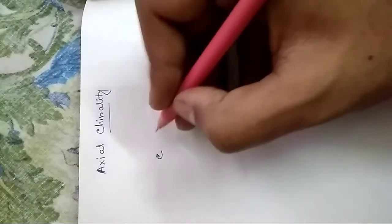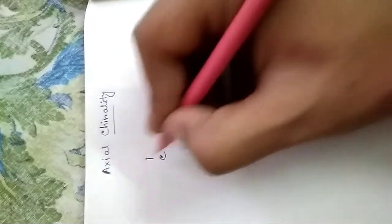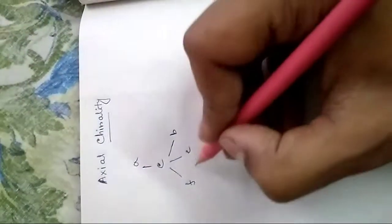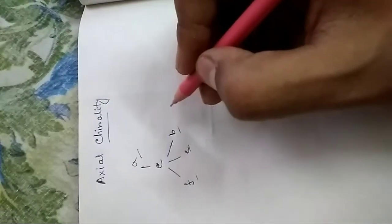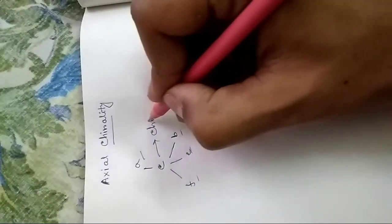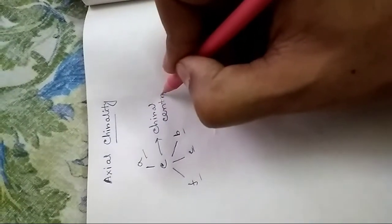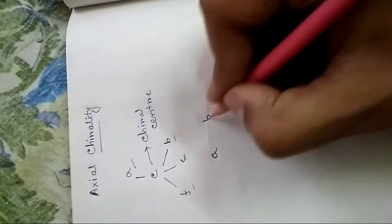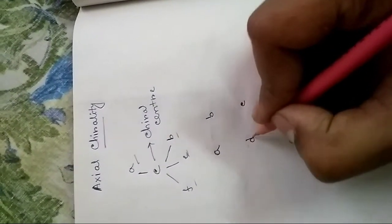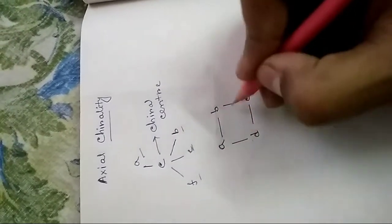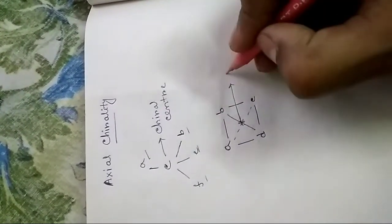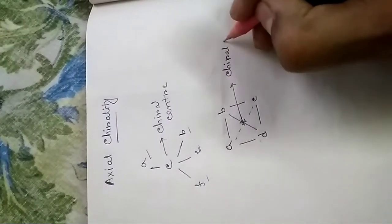We all know that for a carbon center to be chiral, the four ligands must be different. Here you can clearly see that these four ligands — A, B, C, D — are different, so this center is a chiral center.